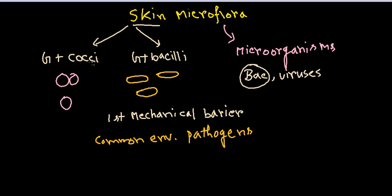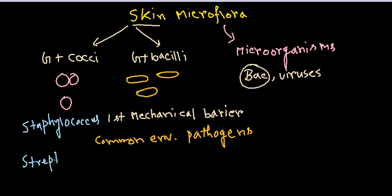Among gram positive cocci, examples are Staphylococcus and Streptococcus. These are very common bacteria and very common microflora. When writing these bacteria names, you should write them in italics because these are scientific names.